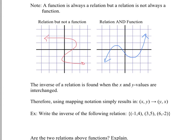The inverse of a relation is found when the x and y values are interchanged. So the inverse is important: if you have a point (x, y), that new point becomes (y, x). Simply put — flip the x and y values.